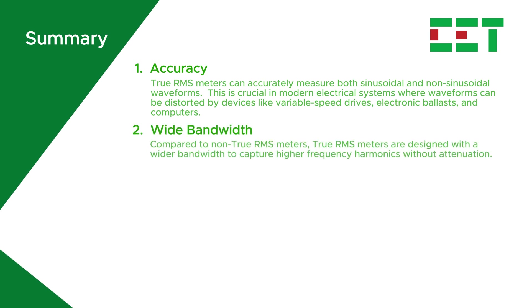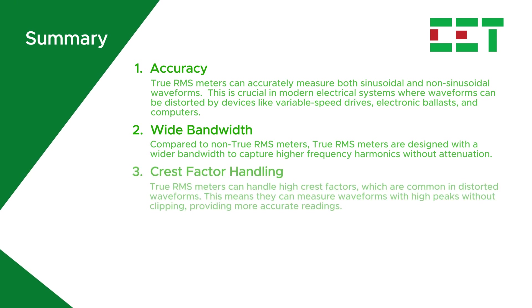True RMS meters normally have a wider bandwidth to capture higher frequency harmonics without attenuation. They can handle high crest factors, which are common in distorted waveforms. This means they can measure waveforms with high peaks without clipping, providing more accurate readings.